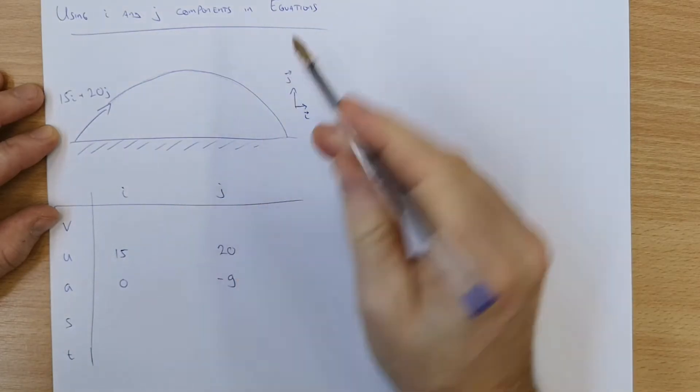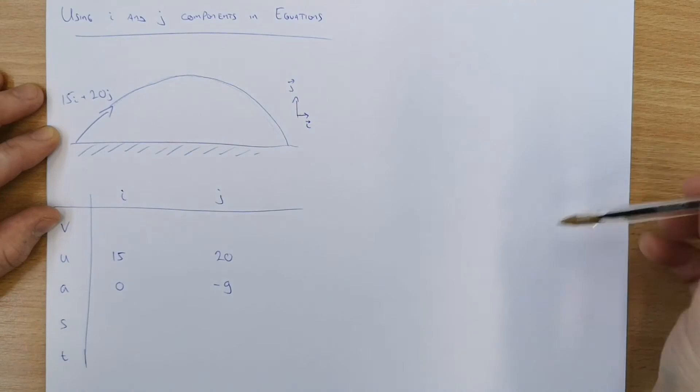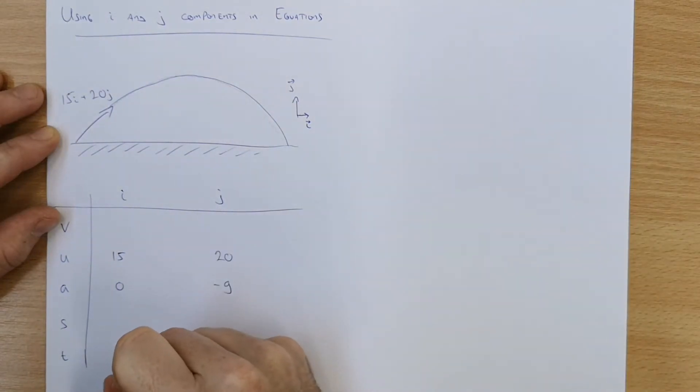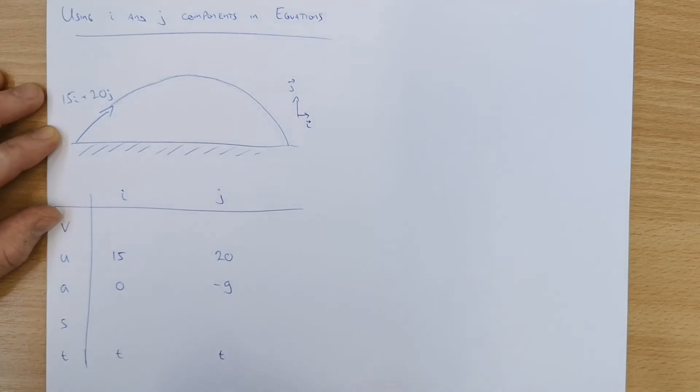Remember we define up as positive so gravity is going down this way. Time is just the same in both of them. So we have v and s that are a little bit tricky to work out.